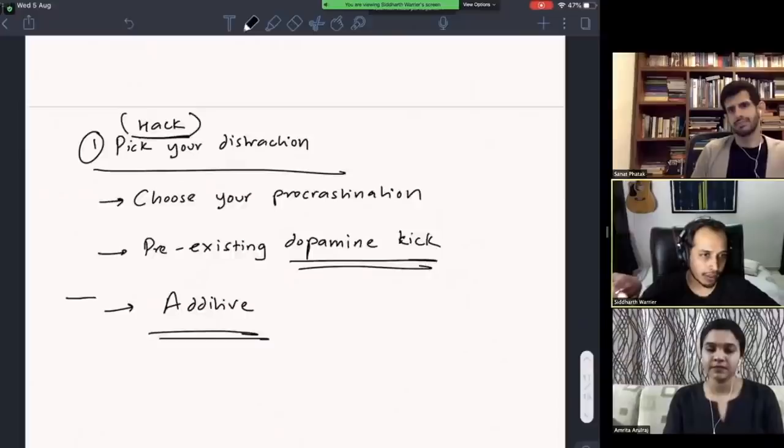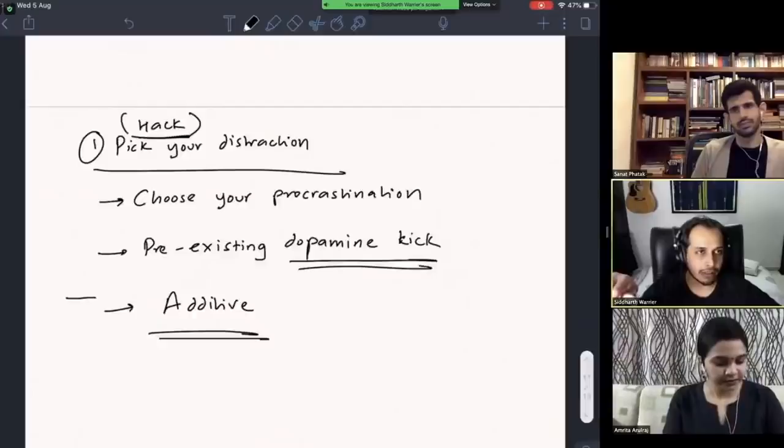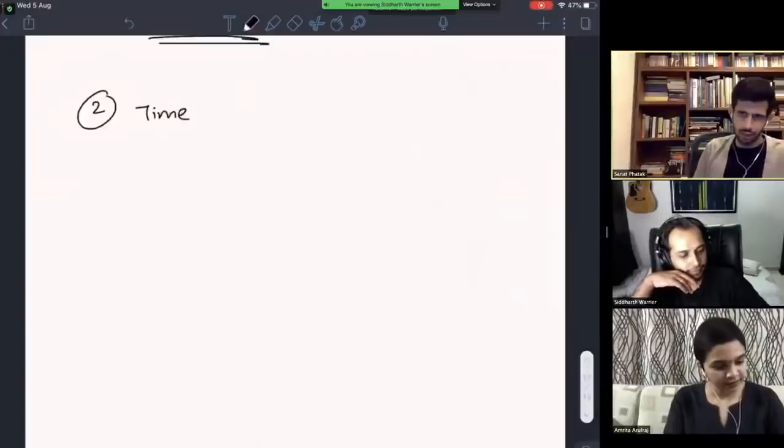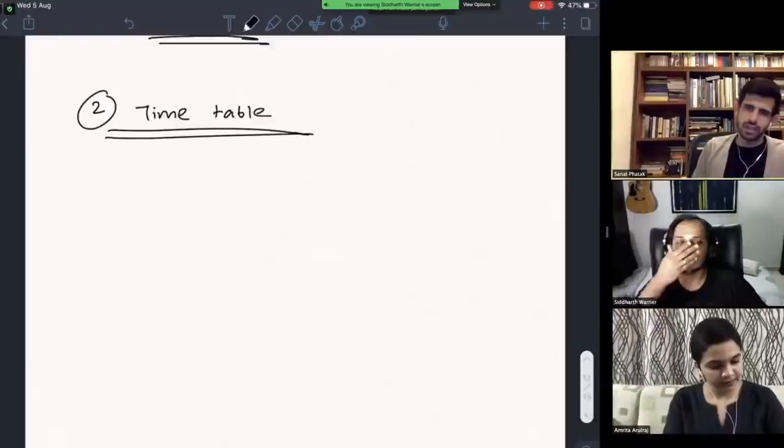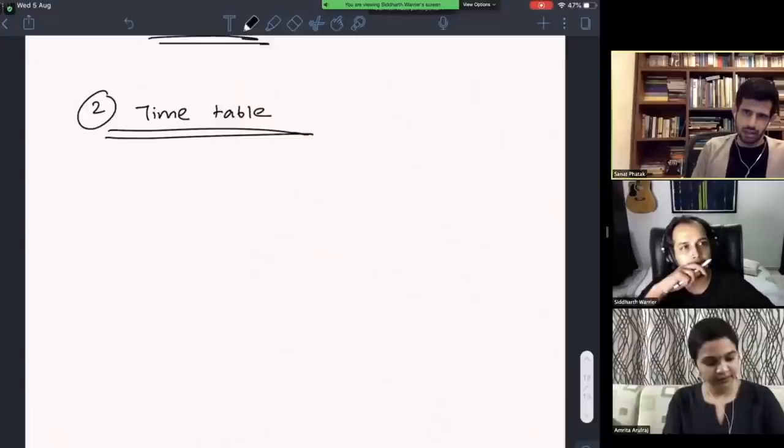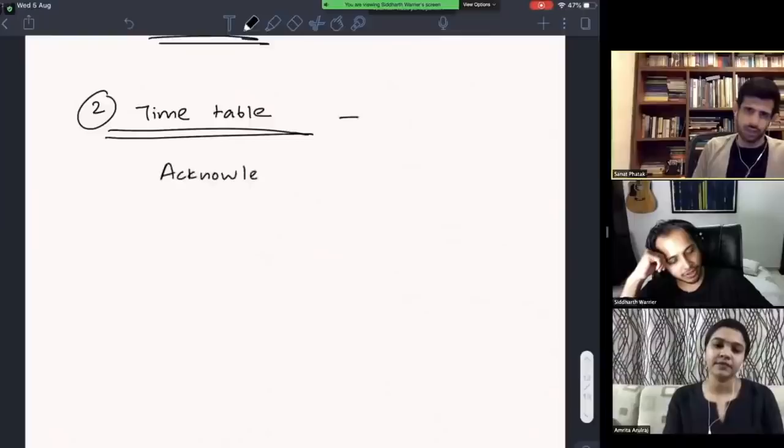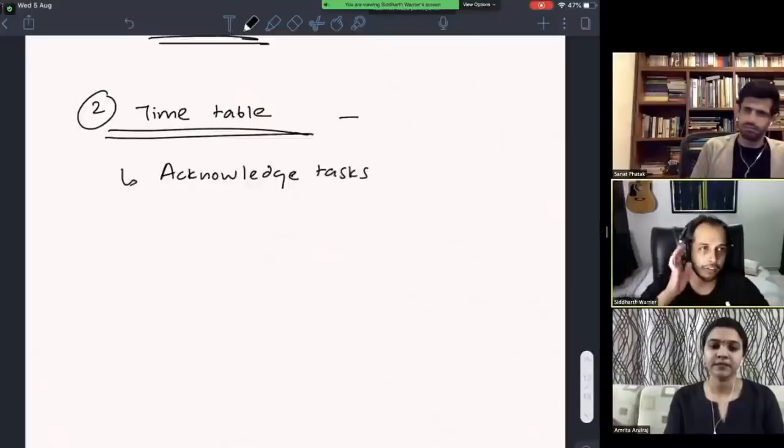I have one more thing to say about choosing your procrastination. You should ideally pick things that are additive. My biggest problem with our current choices of distraction is you spend three hours on Facebook today, tomorrow, next week, and today's three hours make no difference to next week's three hours. So if you're going to pick up a distraction, pick up something that gets added on top of each other.